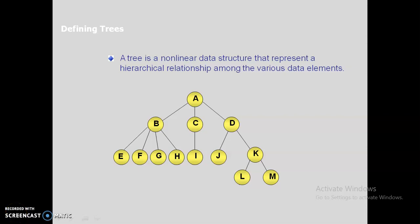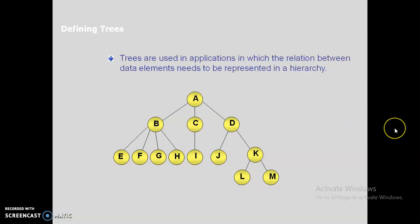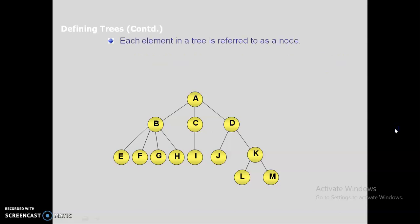Hello students, today we are moving on to module 4. We have already discussed the basic terminologies of trees. A tree is a nonlinear data structure that represents a hierarchical relationship among the various data elements. Trees are used in applications in which the relation between data elements needs to be represented in a hierarchical model.